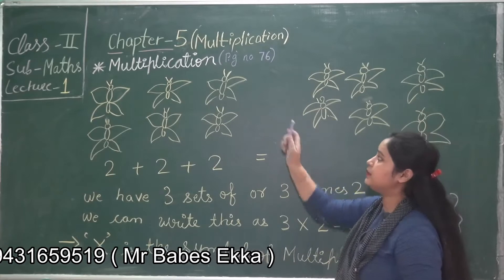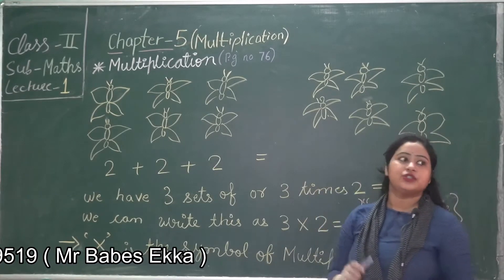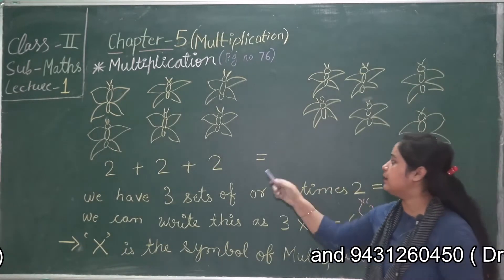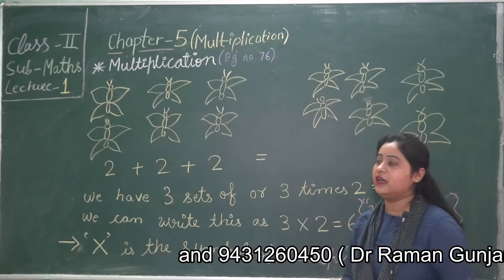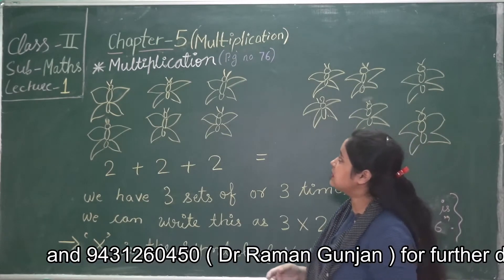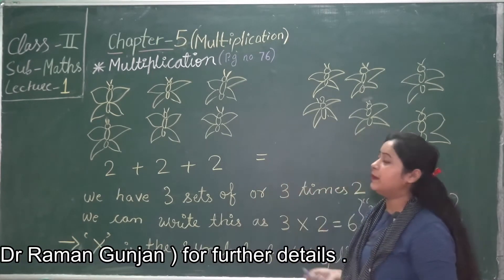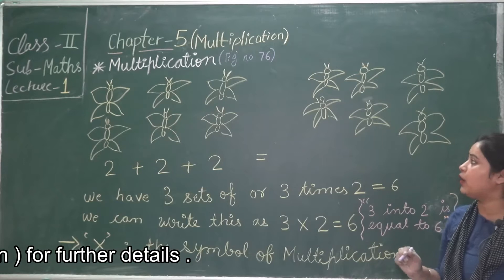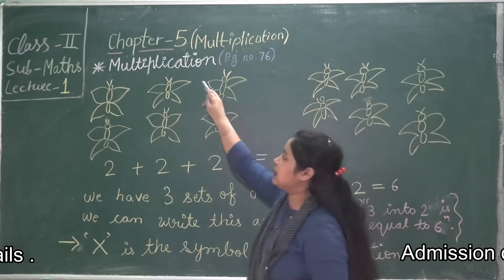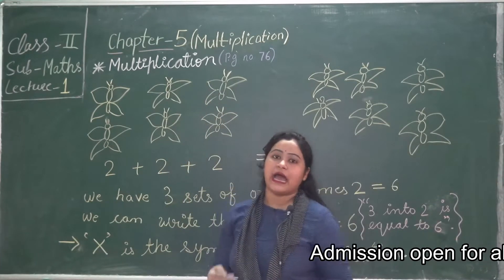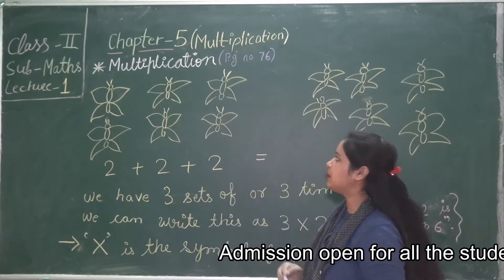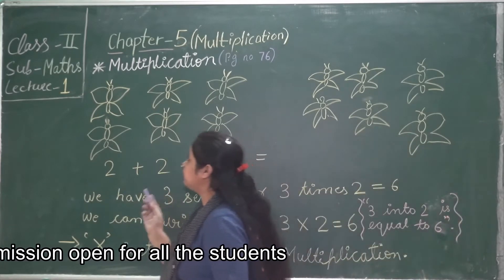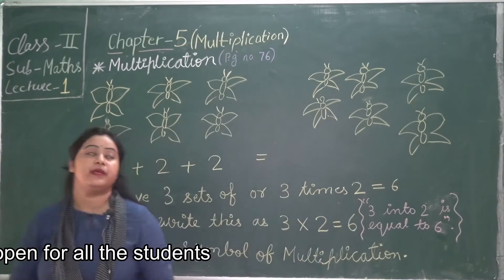In this chapter we will talk about multiplication. Multiplication is a way of adding the same numbers repeatedly. We have also talked about multiplication in our previous chapters. So multiplication means adding the same numbers repeatedly. For this, I have drawn some butterflies here to help you understand.